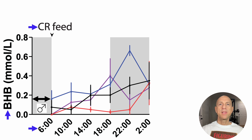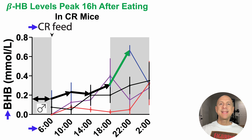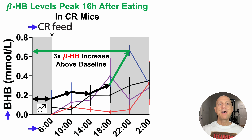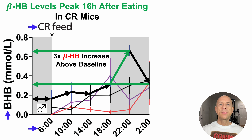At that time, beta-hydroxybutyrate levels are relatively low, around 0.2 millimolar or 200 micromolar. For the first eight hours after fasting, beta-hydroxybutyrate levels still stay around 0.2 millimolar. But then they start to increase 12 hours after fasting, with a peak at 16 hours — at that time, beta-hydroxybutyrate levels are about three to three-and-a-half times higher, around 0.6 to 0.7 millimolar. Interestingly, beta-hydroxybutyrate levels don't stay high as the fasting window continues to 20 hours — blood levels actually start to decline, though still 1.5 to 2 times higher than baseline.